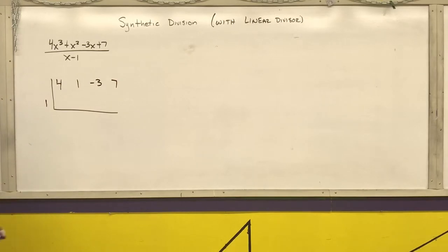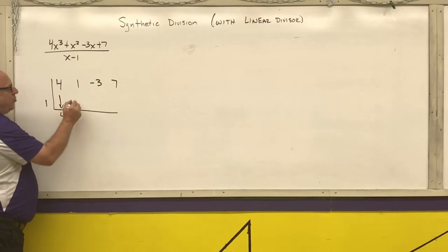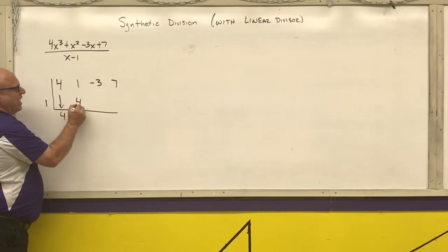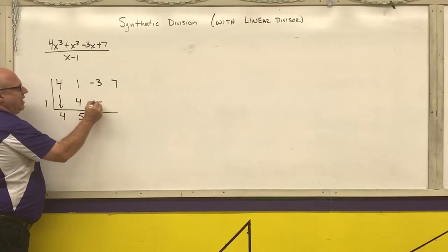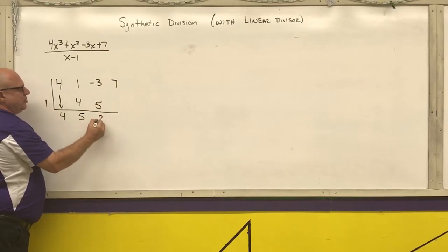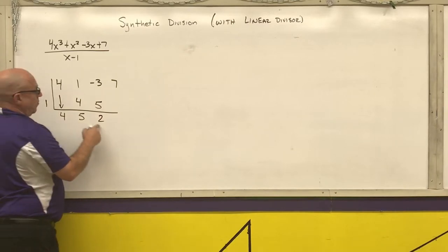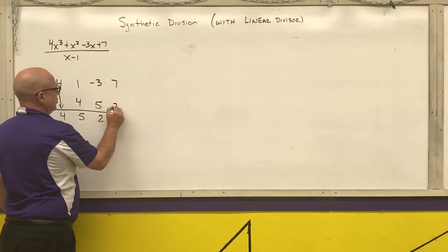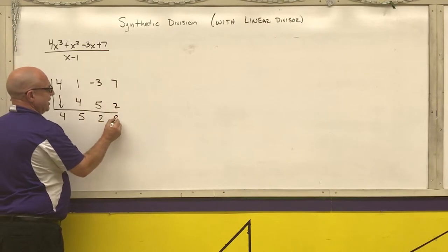Then follow the algorithm: copy, multiply — 1 times 4 is 4 — add: 1 plus 4 is 5. Multiply: 5. Add: negative 3 plus 5 is 2. Multiply: 1 times 2 is 2. Add: 7 plus 2 is 9.